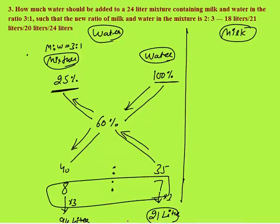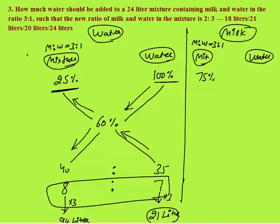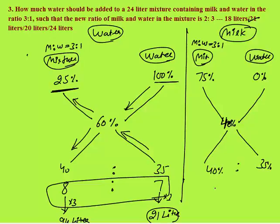The answer is 21 liters, which is option B. We can also verify this using the milk allegation. The mixture contains milk and water in the ratio 3 is to 1, so it has 75% milk. Water contains 0% milk. The final mixture has milk and water in the ratio 2 is to 3, so milk is 2 by 5, which is 40%. Subtracting diagonally: 75 minus 40 is 35, and 40 minus 0 is 40. The ratio is again 8 is to 7, giving the same answer of 21 liters.